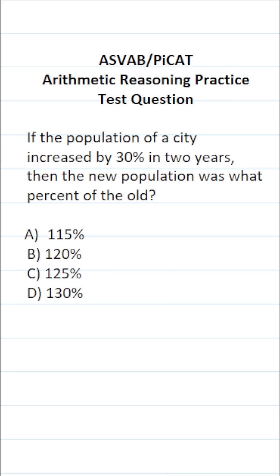So in this case, we have an old population that increases by 30% to become a new population.